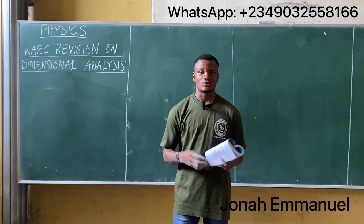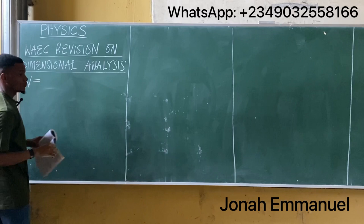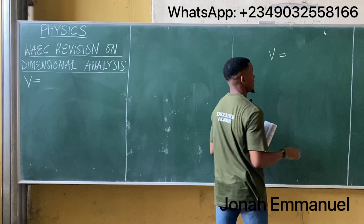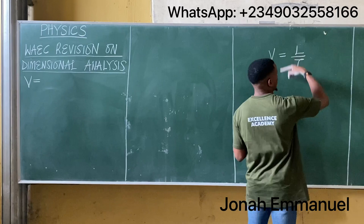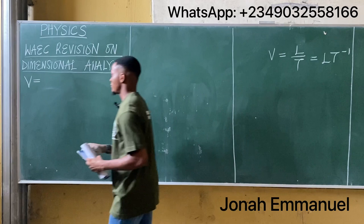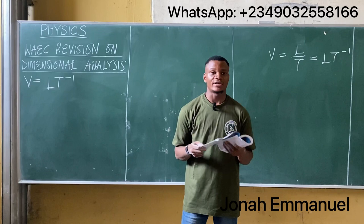The first thing you have to do is write out the given parameters. The first parameter given is v, velocity. The dimension for velocity — we know that velocity v is equal to displacement, which is a length, over time t. Written in index form that's equal to L T to the power minus one. This becomes the dimension of velocity, so v equals L T to the power minus one.